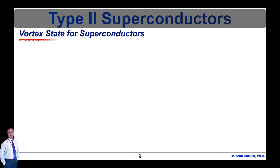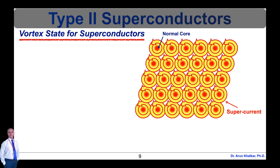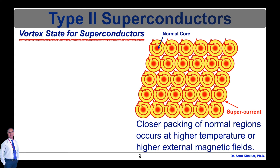Now let's see what is the vortex state for superconductors. As shown in this diagram, type 2 superconductors usually exist in a vortex state with normal cores surrounded by superconducting regions, which allows magnetic field penetration. As their critical temperatures are approached, the normal cores are more closely packed and eventually overlap as the superconducting state is lost. Closer packing of normal regions occurs at higher temperature or higher external magnetic fields. At the lower of the two critical magnetic fields, magnetic fields begin to penetrate through cores of normal material surrounded by superconducting current vortices. As long as these vortices are stationary, the magnetic fields can penetrate while still maintaining zero electric resistivity paths through the material.